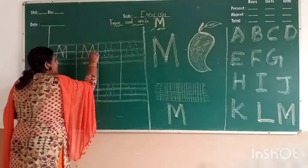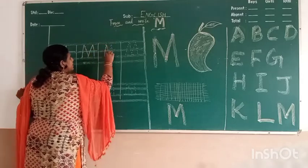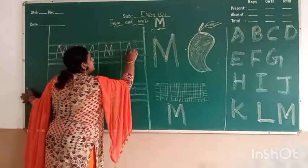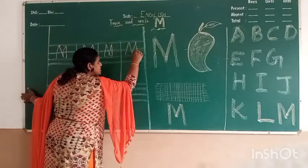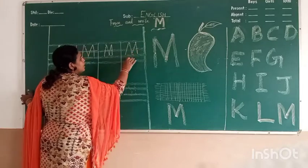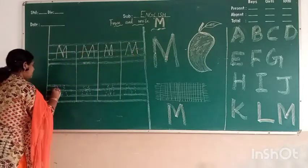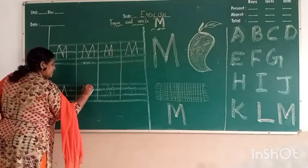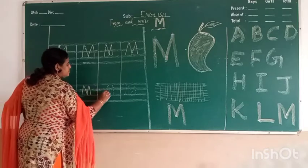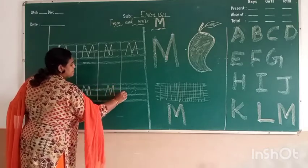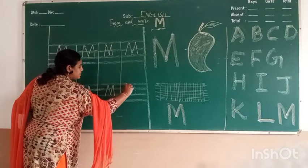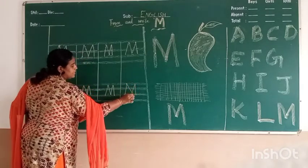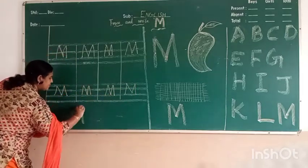Speak and write capital letter M. Standing line, sleeping line, again standing line, last standing line — capital letter M. Speak and write. Capital letter M: standing line, slamming line, again sleeping line, last standing line. Capital letter M.